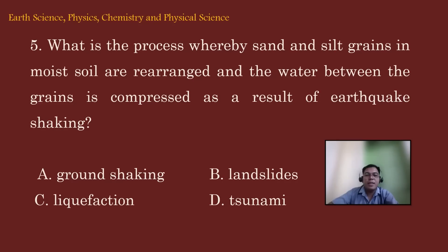Let's move on to item number 5. What is the process whereby sand and silt grains in moist soil are rearranged and the water between the grains is compressed as a result of earthquake shaking? A. Ground shaking. B. Landslides. C. Liquefaction. D. Tsunami.